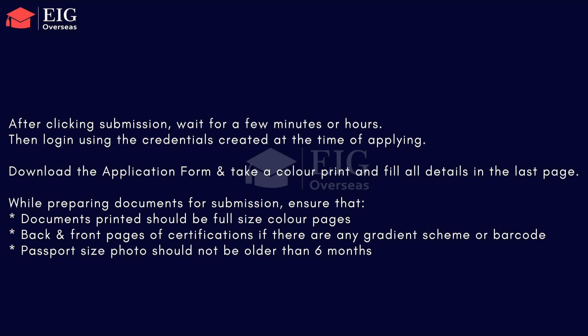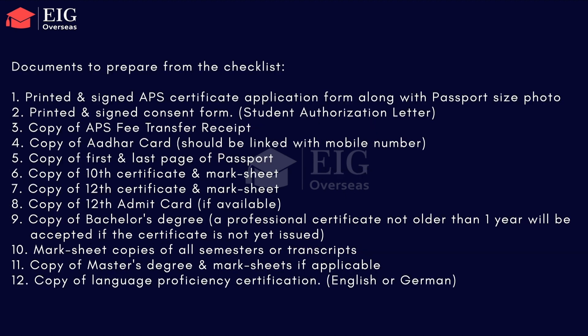Now let's go through the document checklist that you have to send to the Academic Evaluation Center at the German Embassy. Before that, you should follow a few instructions: all checklist copies should be color prints, the size of copies must be A4, include the front and back page of certificates if there is any grading scheme or barcode, and passport size photos must not be older than six months.